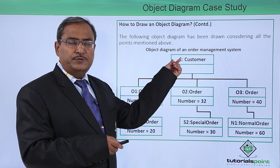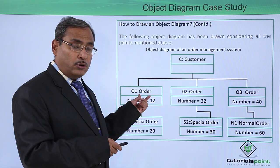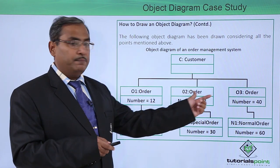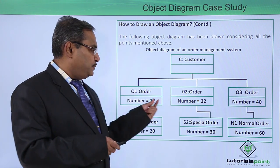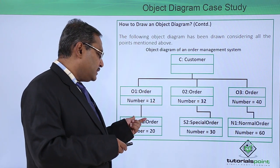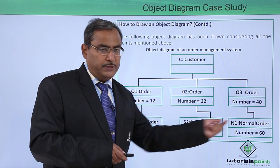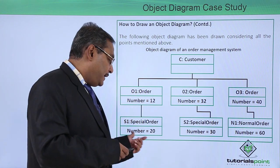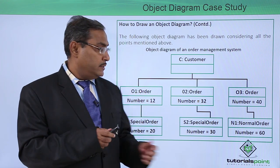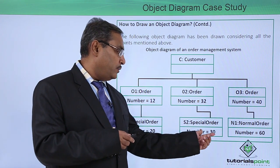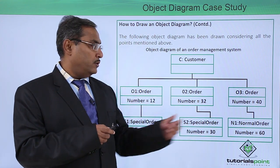In the object diagram, the customer has object name C, and the order class has objects O1, O2, and O3 with their respective numbers. The special order class has objects S1 and S2, and the normal order class has object N1. These contain their respective special order numbers and normal order numbers.